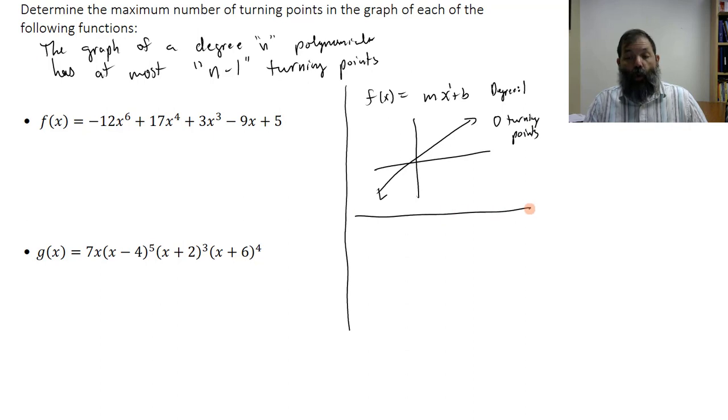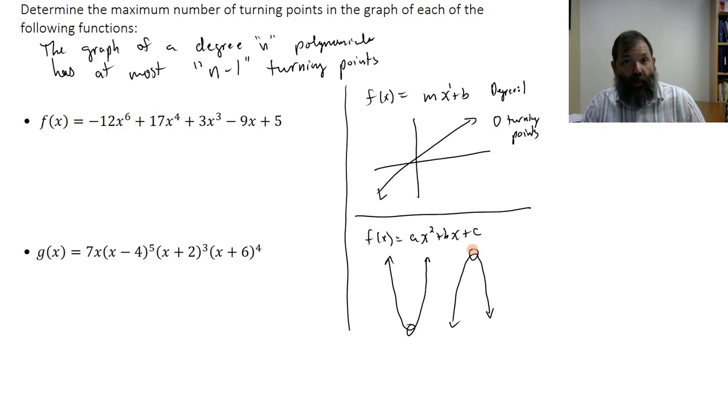And if we think about quadratic functions, those graphs are parabolas. The graph might look like this, or it might look like this, opening up or opening down. And each of these has one turning point.